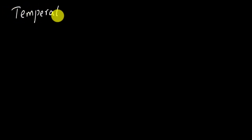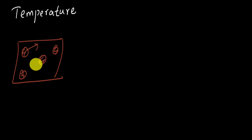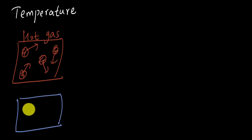We say that temperature is associated with the average kinetic energy of a molecule. So if we have a substance that is hot, let's draw a hot substance with its many molecules — let's say this is a hot gas. Then we say that these gas molecules are moving around with very high speeds. If we had a cold gas, or if we cooled this gas, then these molecules would slow down. They would still move around but they would now be slower.